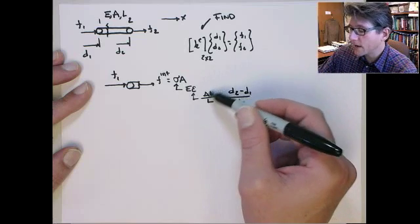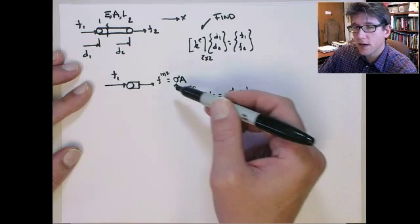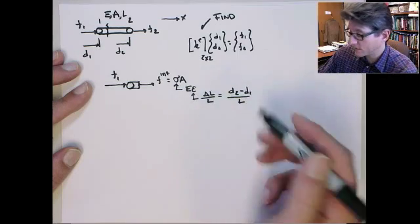If D1 is greater than D2, then the bar is compressing. Delta L will be negative. You'll get a negative strain and a negative stress, a compressional stress.